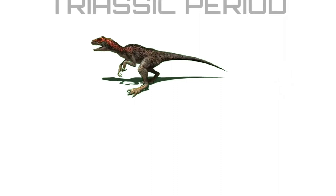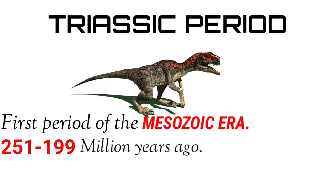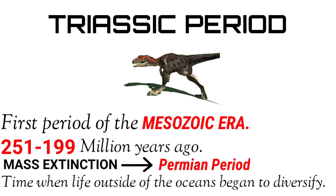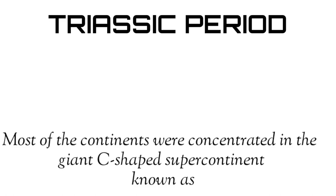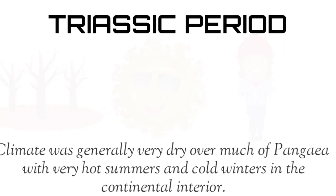The Triassic period was the first period of the Mesozoic era and occurred between 251 million and 199 million years ago. It followed the great mass extinction at the end of the Permian period and was a time when life outside of the oceans began to diversify. At the beginning of the Triassic, most of the continents were concentrated in the giant C-shaped supercontinent known as Pangaea. The climate was generally very dry over much of Pangaea, with very hot summers and cold winters in the continental interior, and a highly seasonal monsoon climate prevailed nearer to the coastal regions.